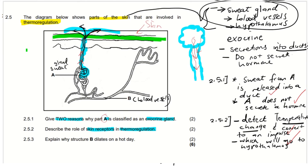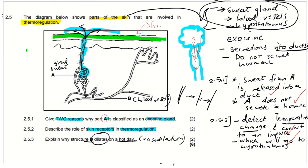Question 2.5.3: explain why structure B dilates on a hot day. Structure B is blood vessels — tubes that transport blood. When something dilates, it means it is opening up and becoming wider, increasing its diameter. We call this process vasodilation — when the blood vessels dilate or become wider.